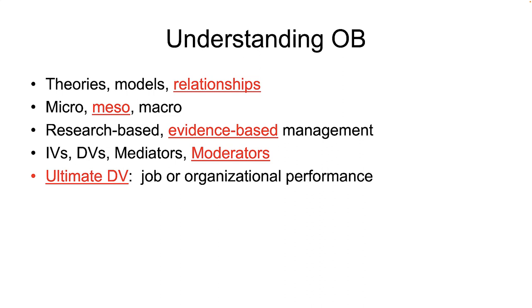The ultimate DV is performance. If we are analyzing at the micro level of analysis, job performance can be dissected into task performance, citizenship behavior, and counterproductive work behavior, or CWB. Task performance is expected. Citizenship behavior is a bonus. CWB is undesirable. We'll look closer at these aspects of job performance later in this video. At the macro level, company performance and sometimes industry performance is the ultimate DV.